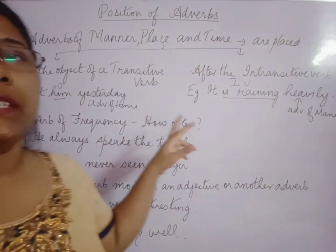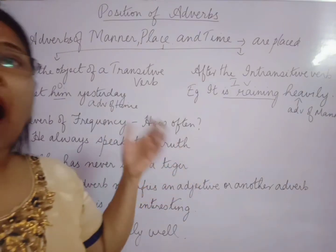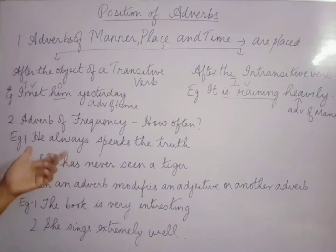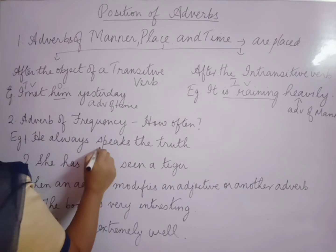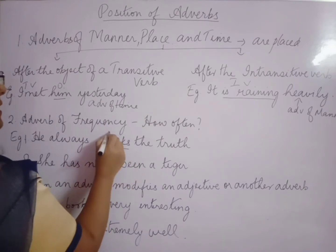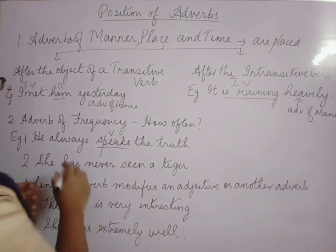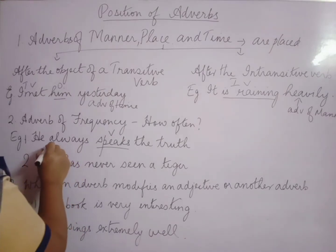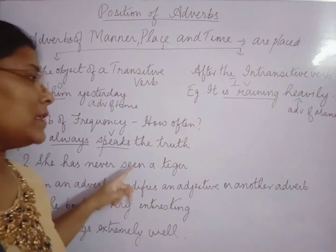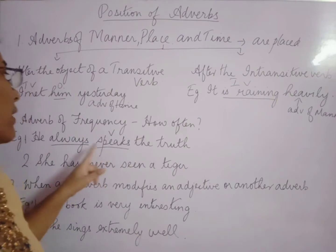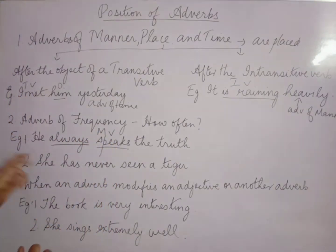Now, adverb of frequency. An adverb of frequency tells us how often an action is done. For example: 'He always speaks the truth.' 'Speaks' is the verb here. How often does he speak? Always. So 'always' is the adverb of frequency, and it is placed before the main verb, that is 'speaks.'